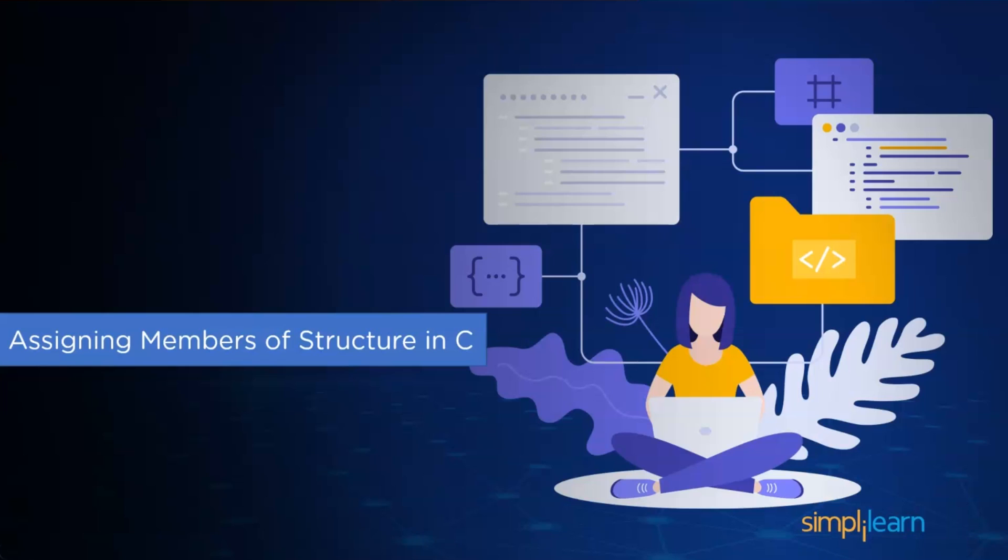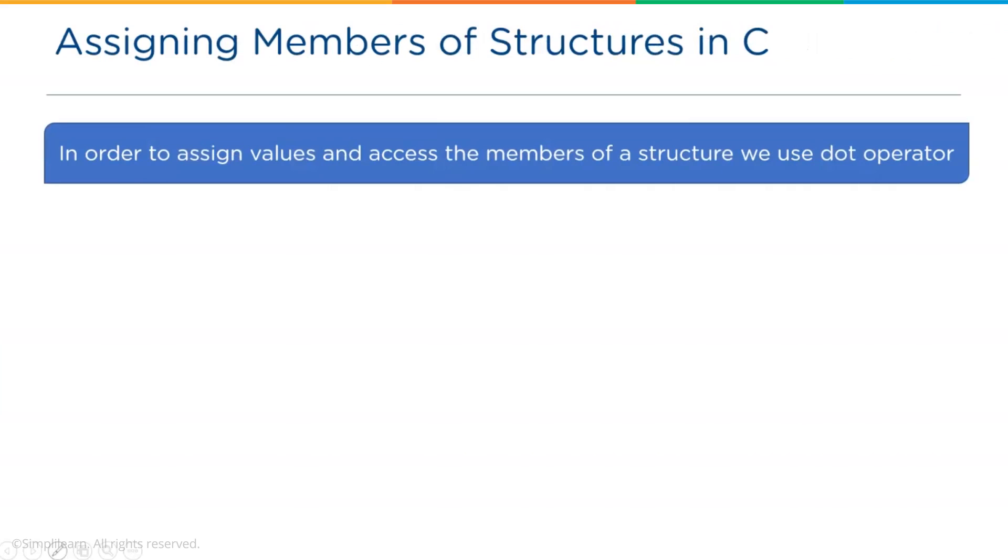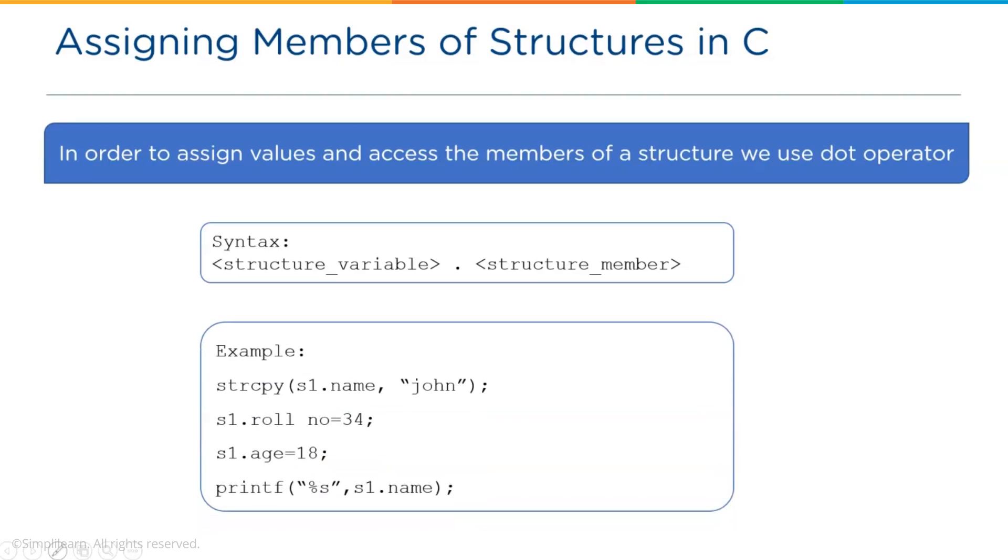So now, let us try to understand the right way of assigning values to the structure members in C. To assign values to all the members of a structure and access, we use dot operator, also known as a period operator. Look at the syntax below to clearly understand how we access and assign the structure members. First, the structure variables followed by the dot operator and structure members. For example, s1.roll number is equal to 34, s1.age is equal to 18 and we make use of the string function strcpy to copy the name.